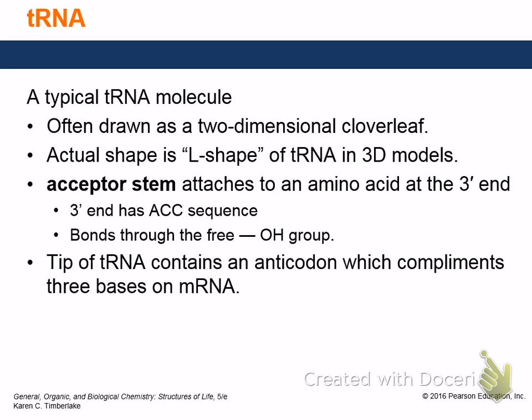mRNA is pretty easy to understand — it's just a strand of RNA created from the DNA using RNA polymerase. The DNA has to unwind and the transcription process starts, basically the same as replication of DNA. tRNA, though, when you look at its actual three-dimensional shape it looks like an L. On one end, called the acceptor stem, it has an amino acid on the three-prime end.